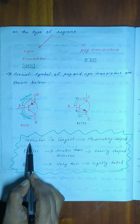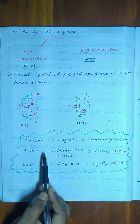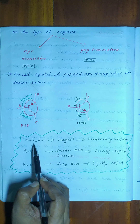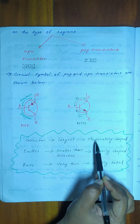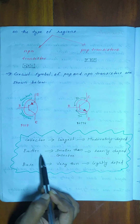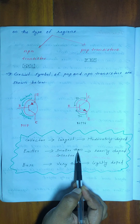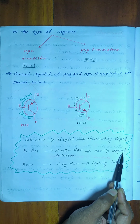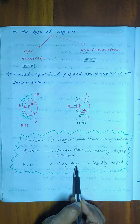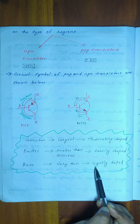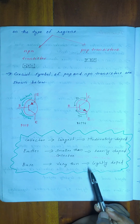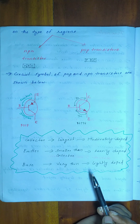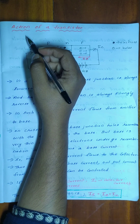Let's see the collector, emitter, and base. The collector is the largest region. The emitter is the smaller region and is heavily doped. The base is a very thin region and is very lightly doped. It is the basic part of the transistor.